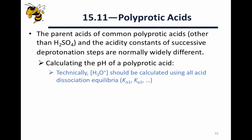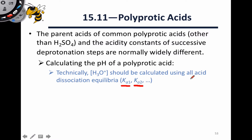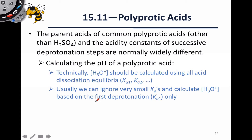Rigorously, we should calculate the H3O⁺ concentration using all acid dissociation equilibria. But if Ka1 is much greater than Ka2 and so on, then the conjugate base produced by the Ka1 equilibrium probably won't dissociate much further, because Ka2 is so much smaller. So in the majority of cases, we can calculate the hydronium concentration and the pH based only on the first deprotonation — just one ICE table — considering only the neutral acid species and the first conjugate base.